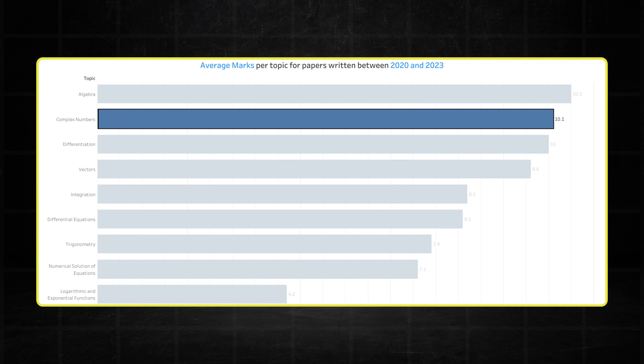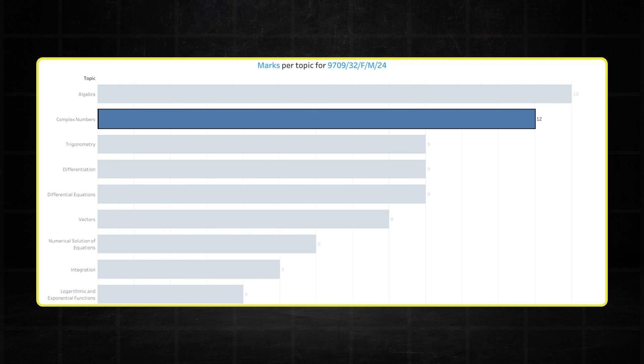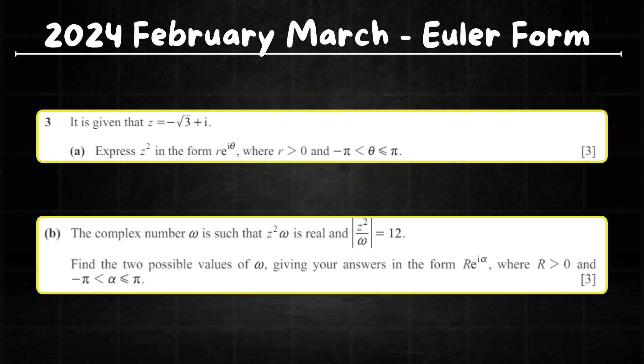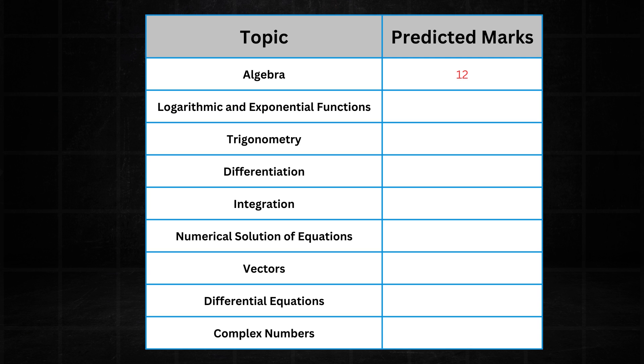Moving on to complex numbers, one of the more consistent high performers. It recorded 12 marks in the February-March paper, slightly higher than its average over the past 4 years. I did notice that Cambridge included a 6-mark Euler form question. So polish up on your understanding of the Euler form because it may come up in the May-June series. For the May-June series, I predict that it goes slightly under its 12-mark season opener to averaging around 10 marks in the May-June series.